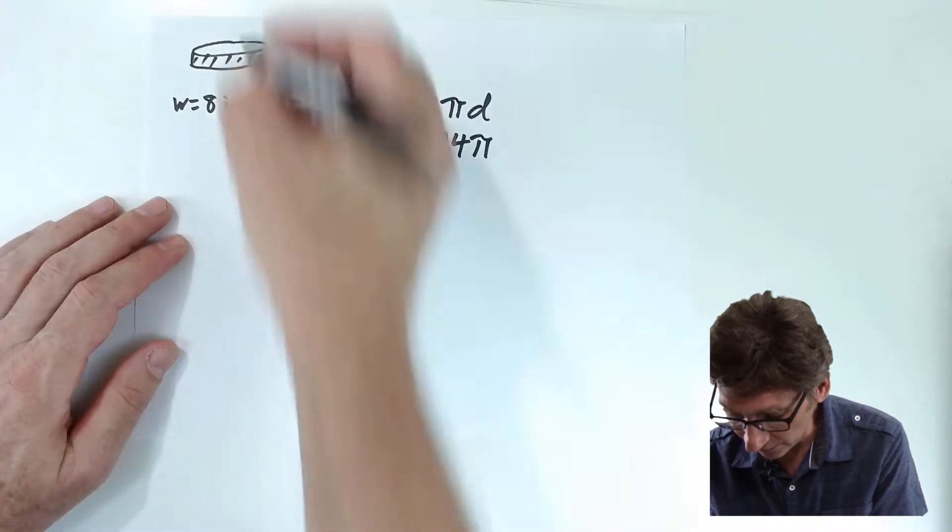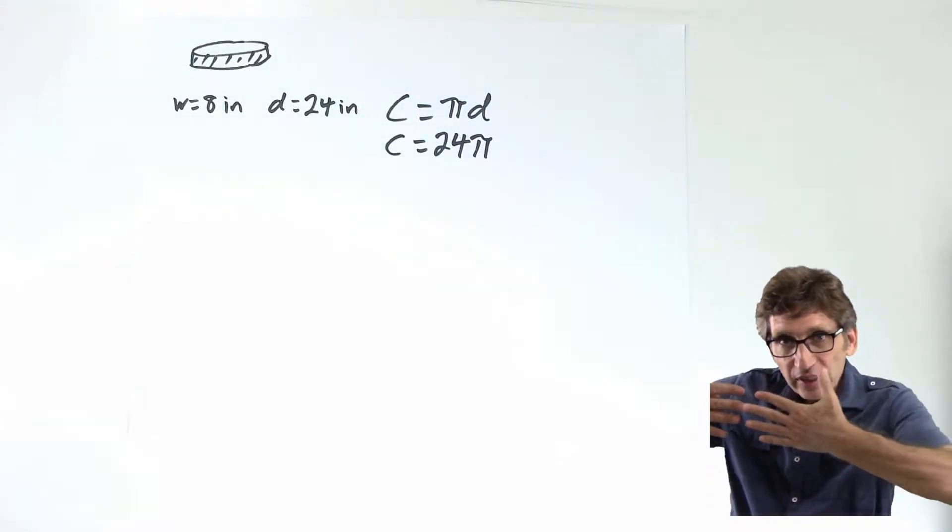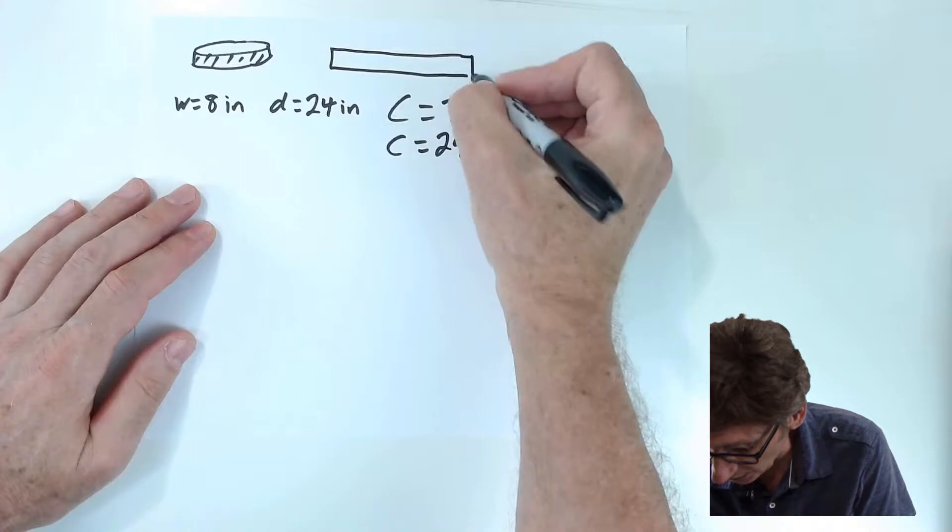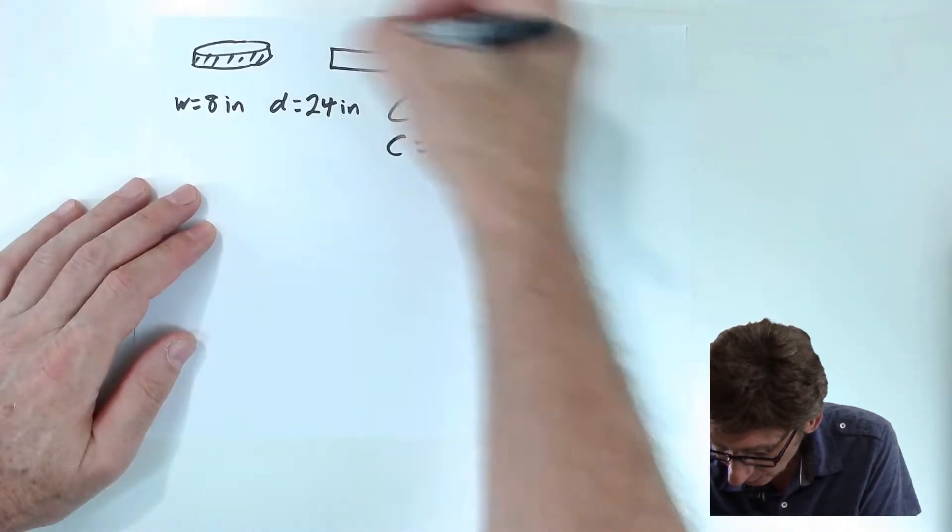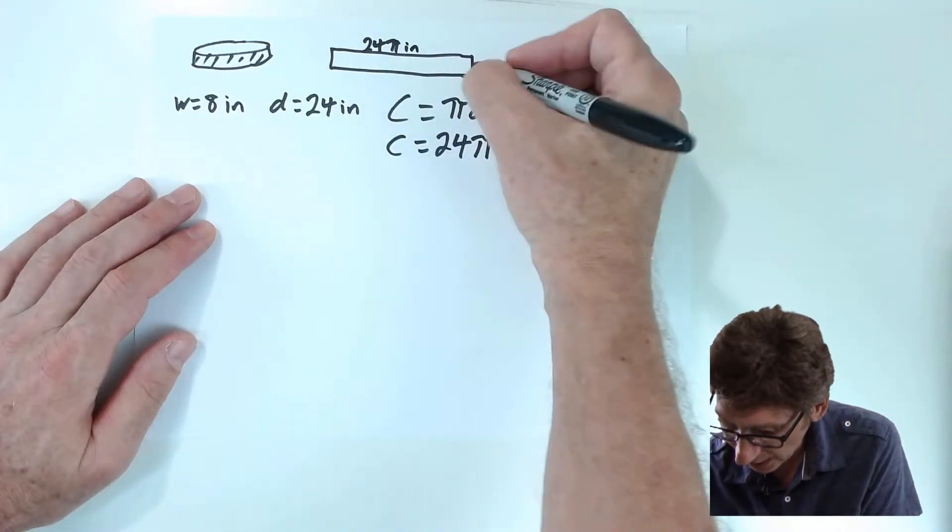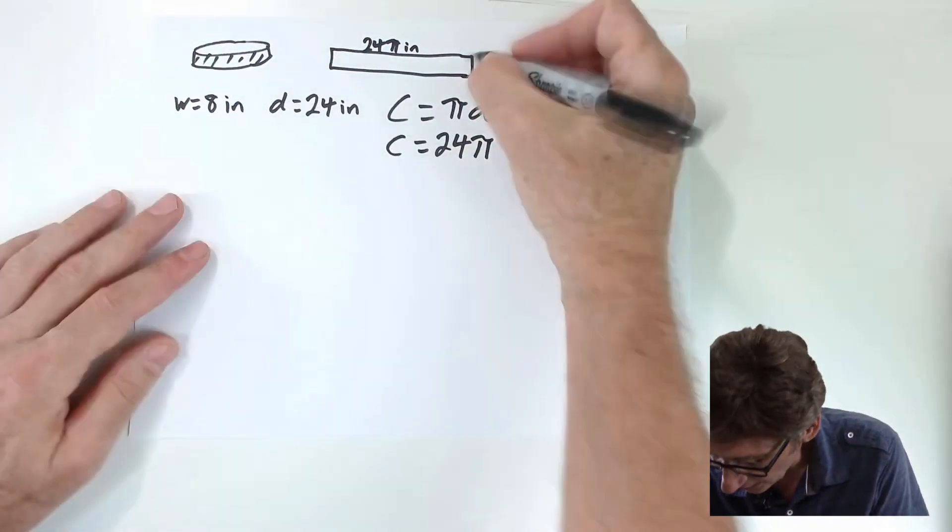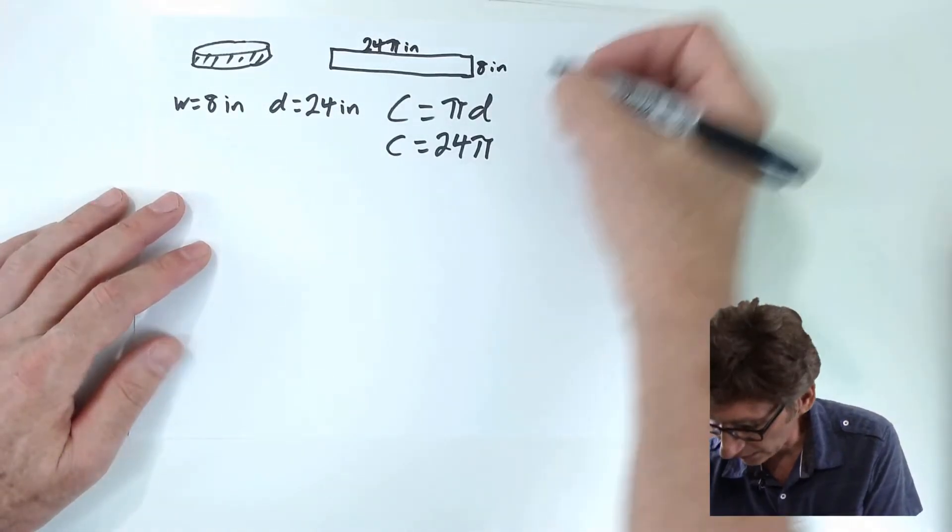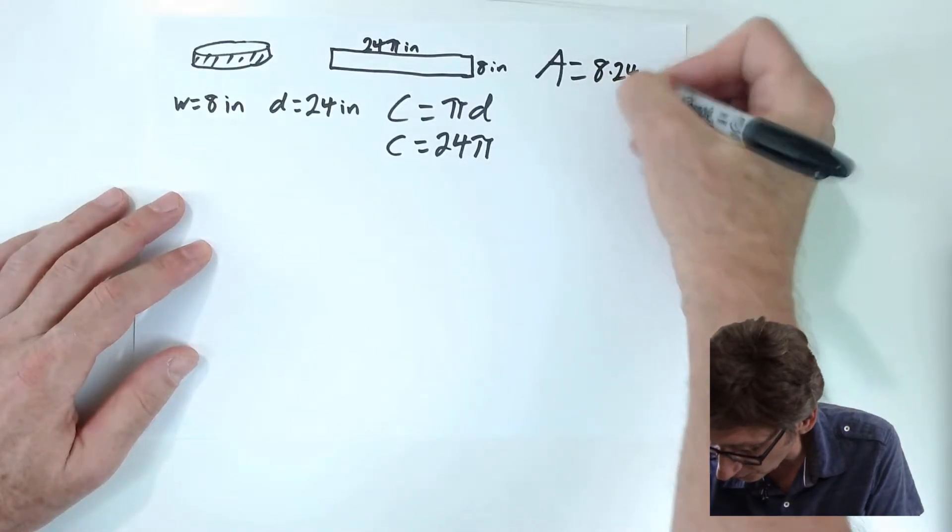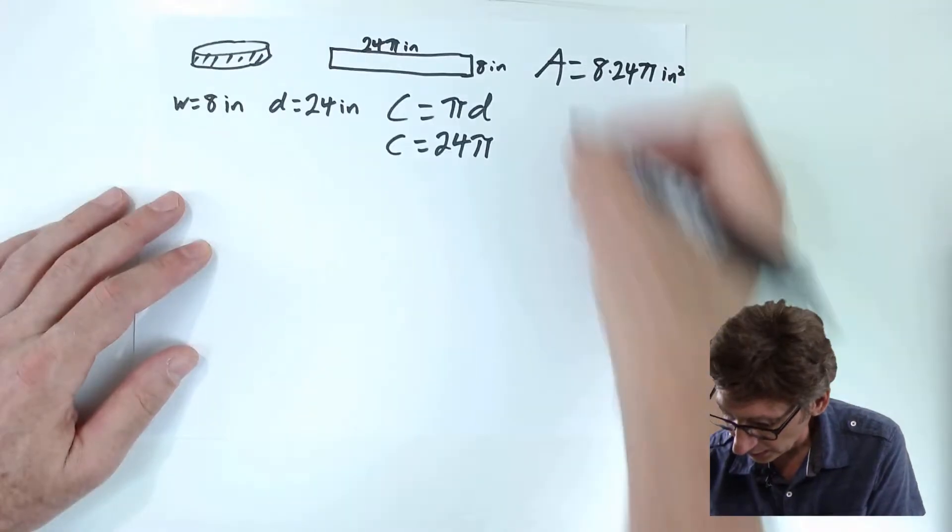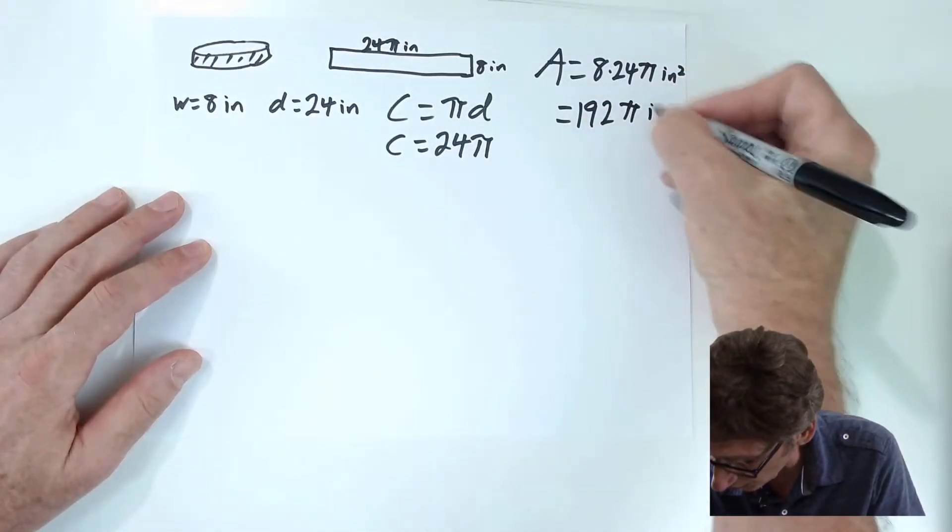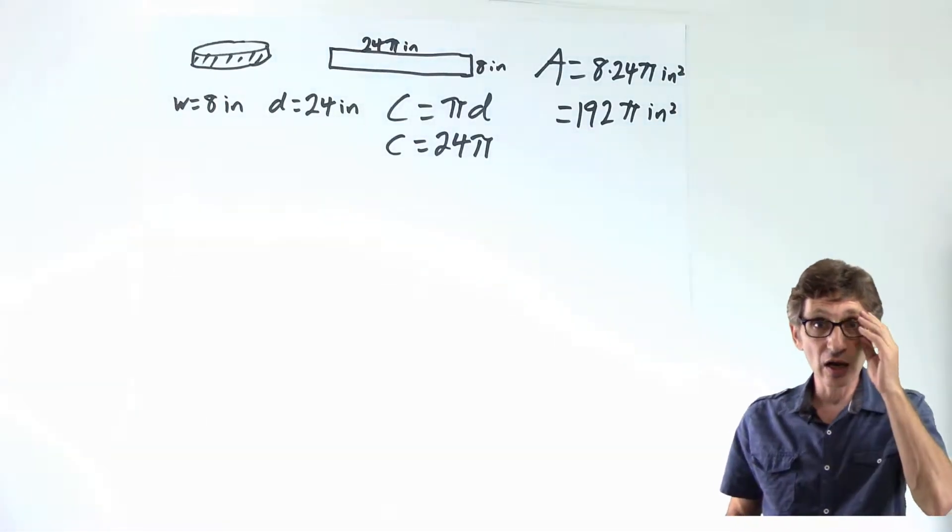This is the circumference. Now if I essentially peel that tire apart and take the track and I just have a large rectangle once I peel the tire open, well, there wouldn't be much point in fixing it then, would there? So this width of the tire is 24 pi inches. The height, which is across the tire, that is 8 inches. So now I'm finding the area. This area will simply be 8 times 24 pi inches squared. 8 times 24, 160 plus 32, 192 pi square inches. That is the area of the tire track.